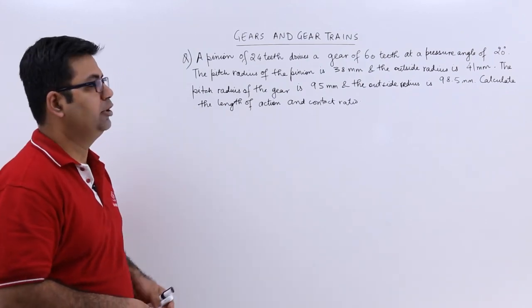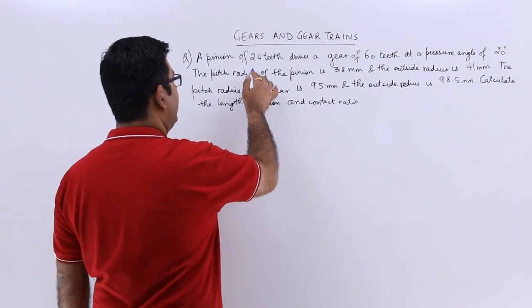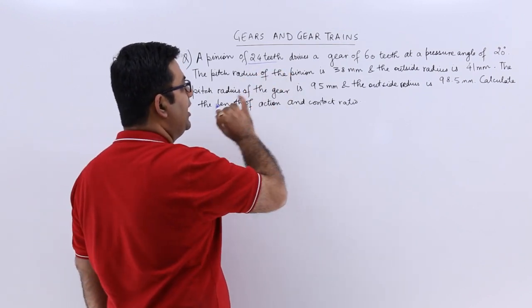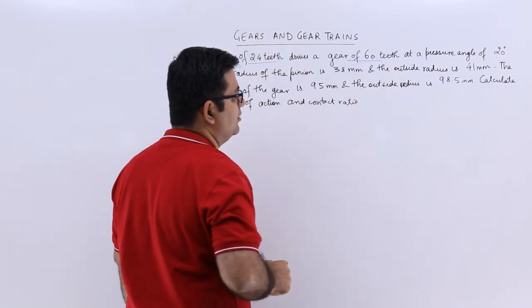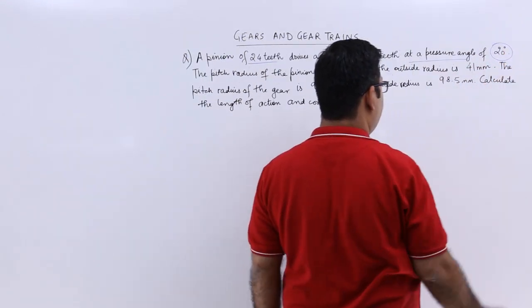Now let's have a look at a question on the topic of gears. The question says we have a pinion of 24 teeth, it drives a gear of 60 teeth at a pressure angle of 20 degrees.